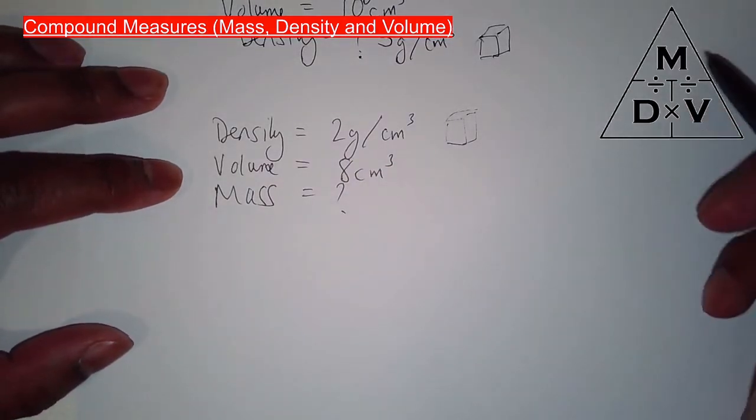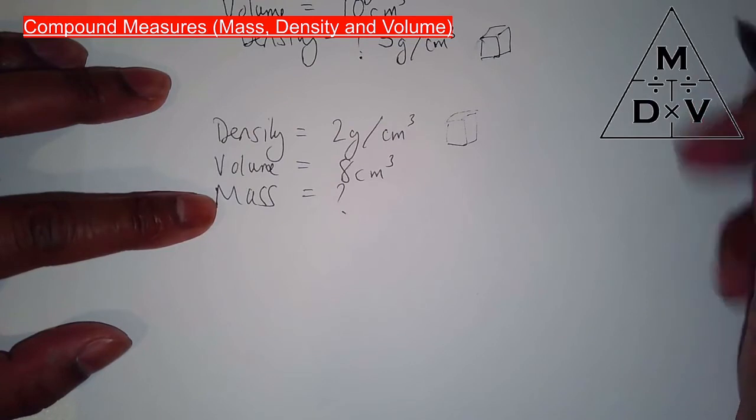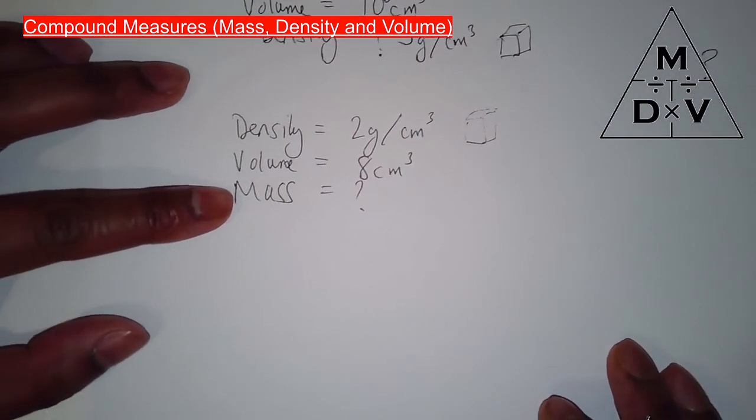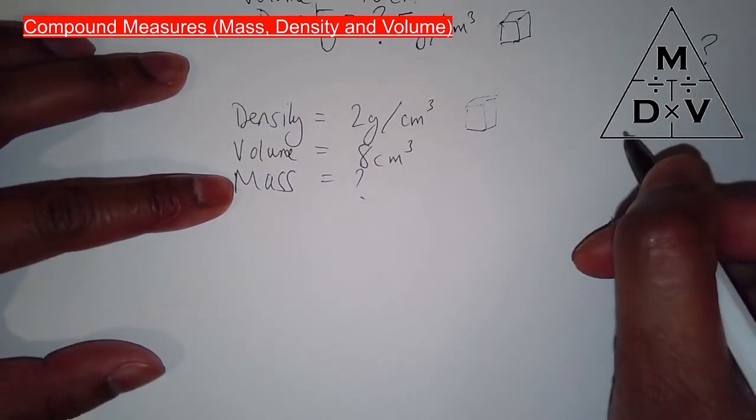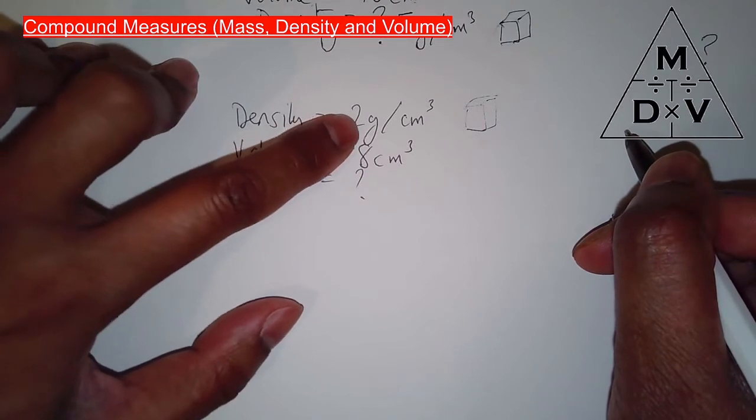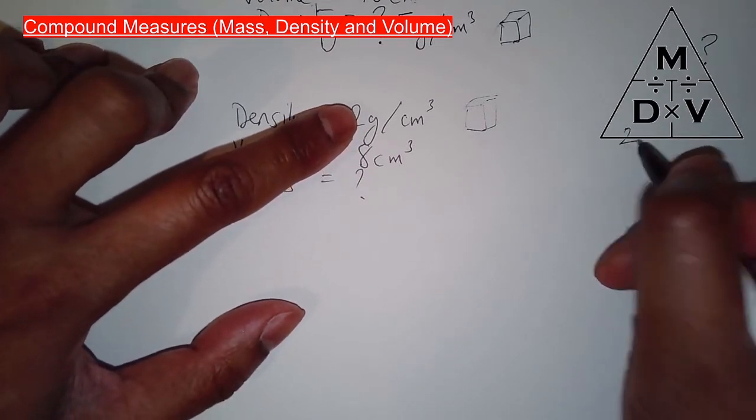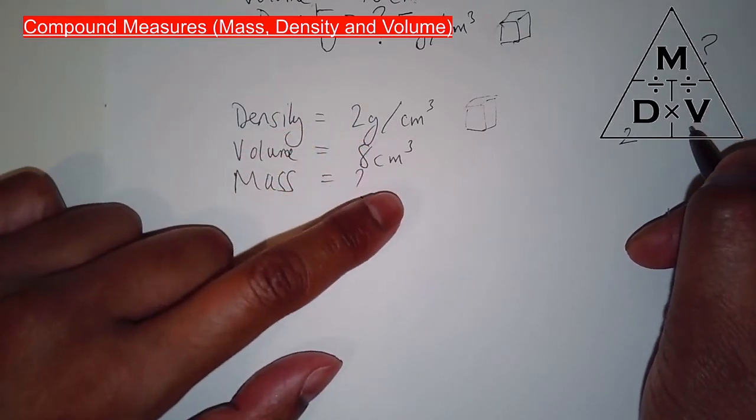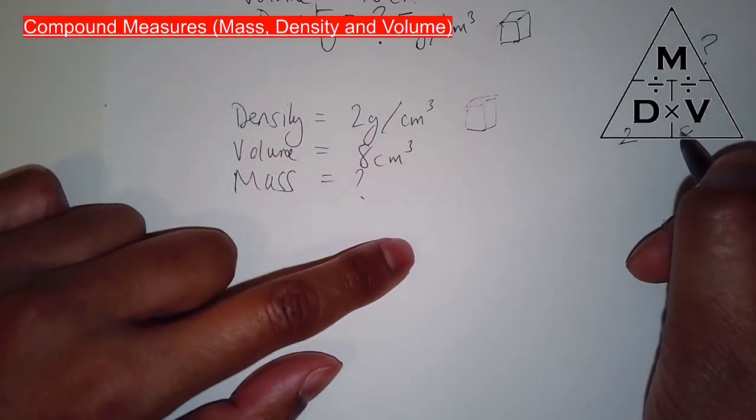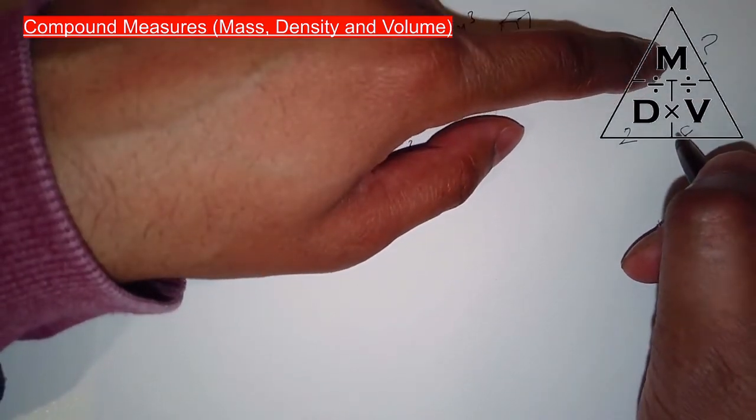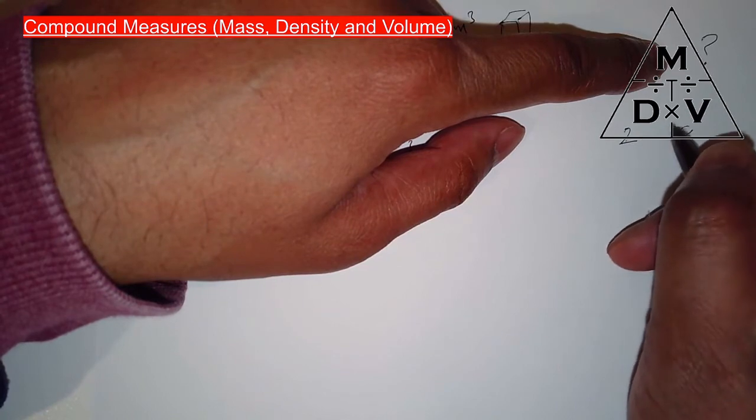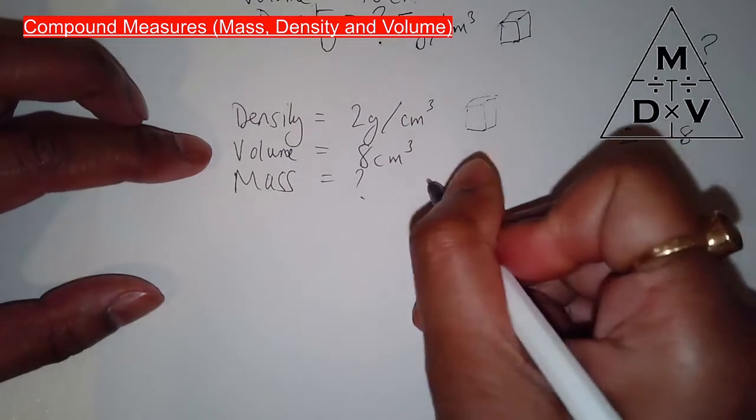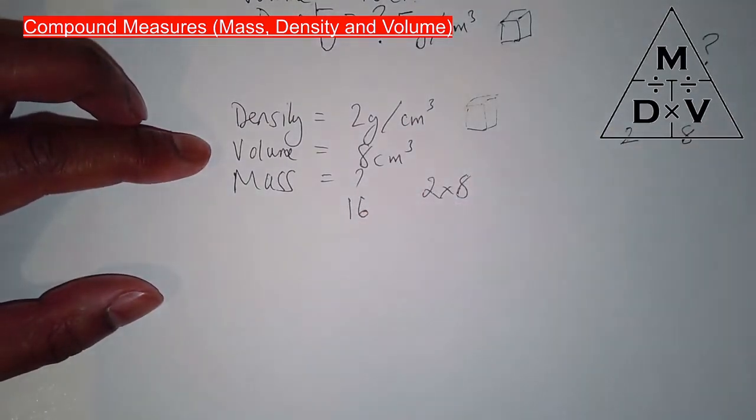So we're looking at a triangle here again. Mass is what we're trying to work out. Put a question mark there. Right there. Density is right there, 2. And the volume, which is right there, is 8. Now, to get the mass, all we're going to do is density times by volume. 2 times 8 is 16.